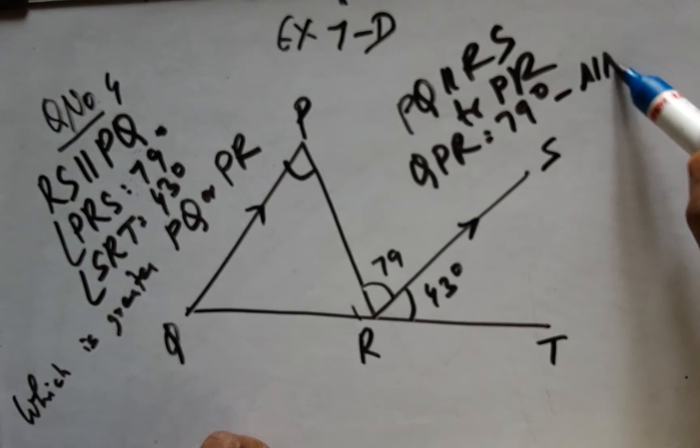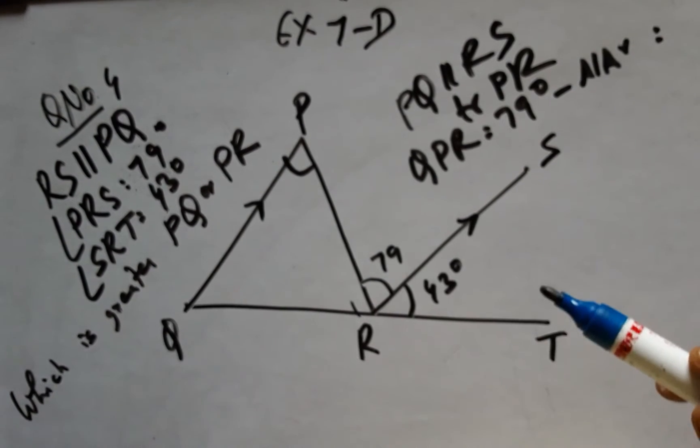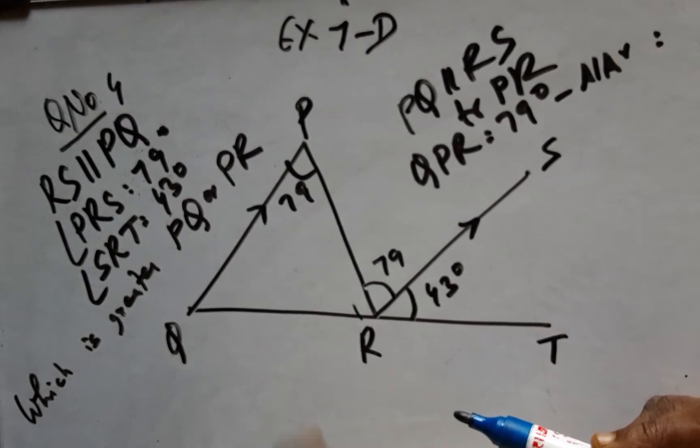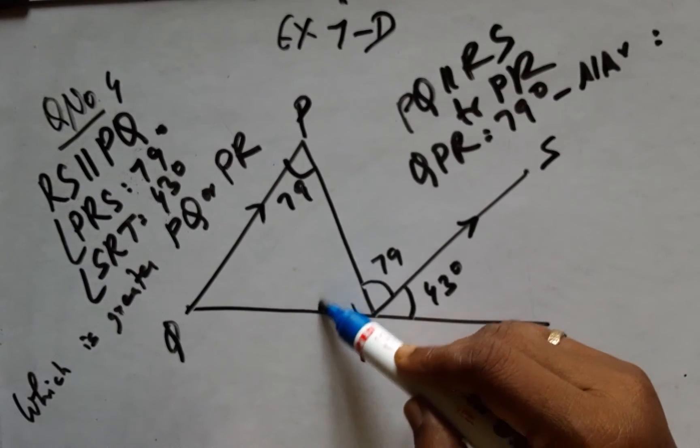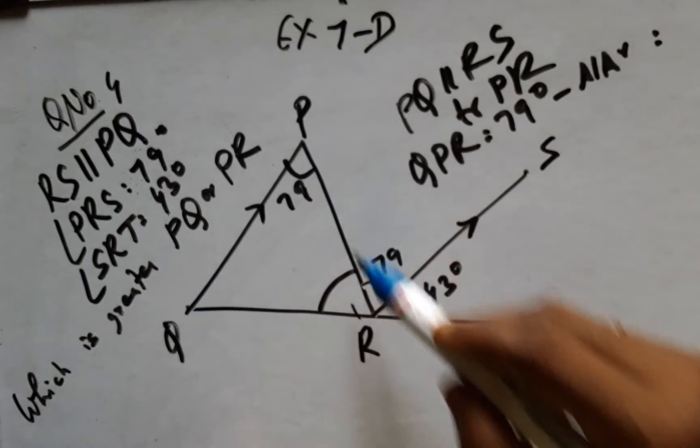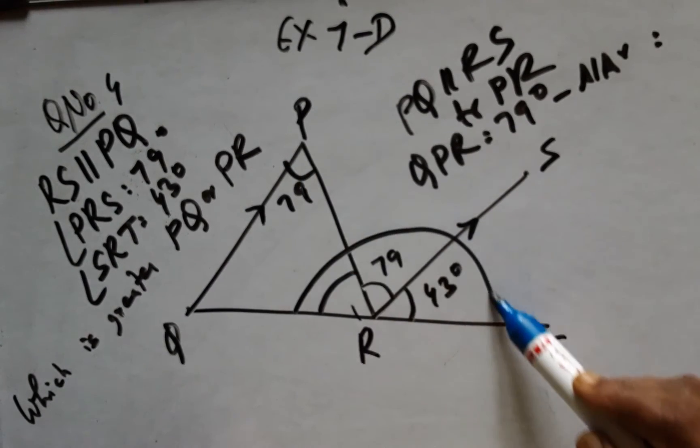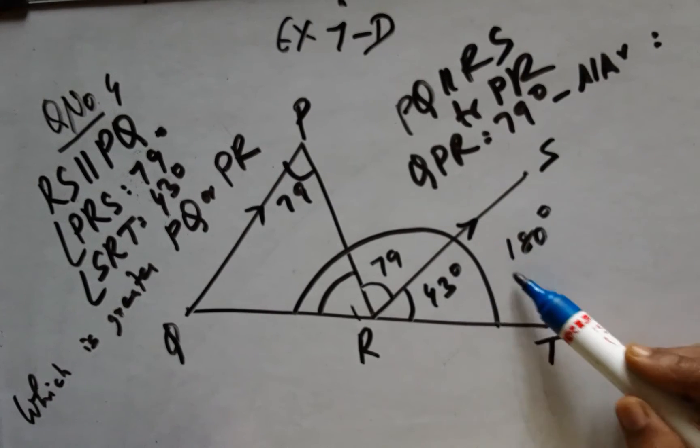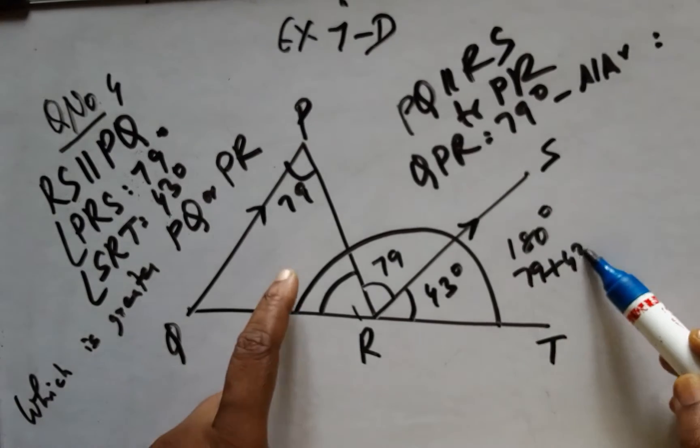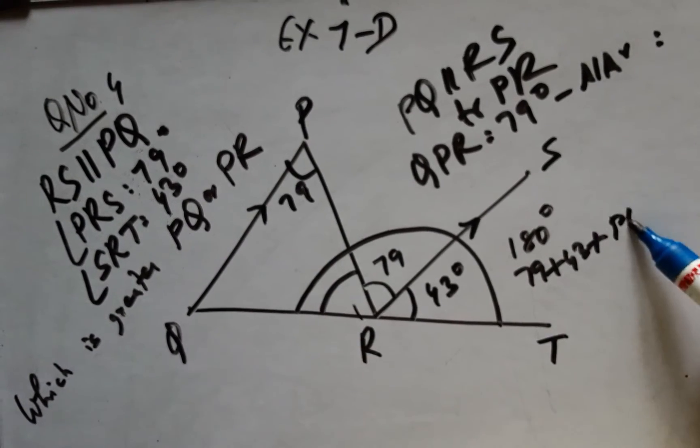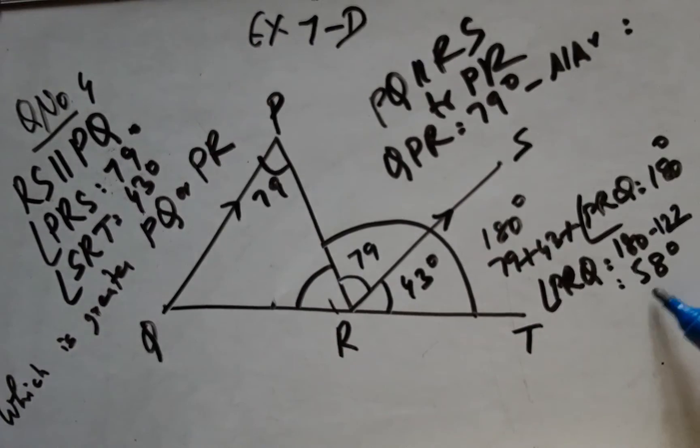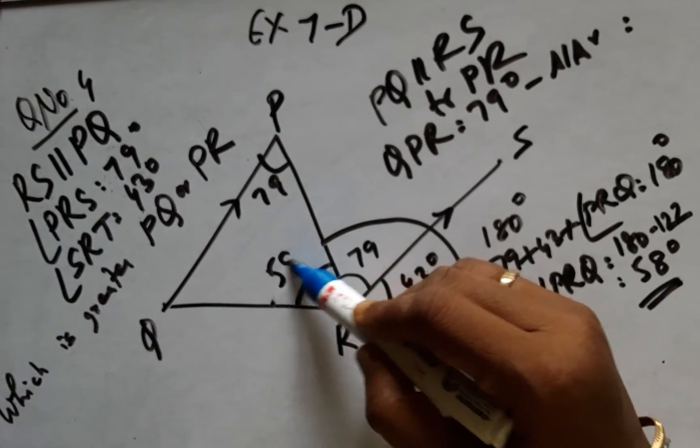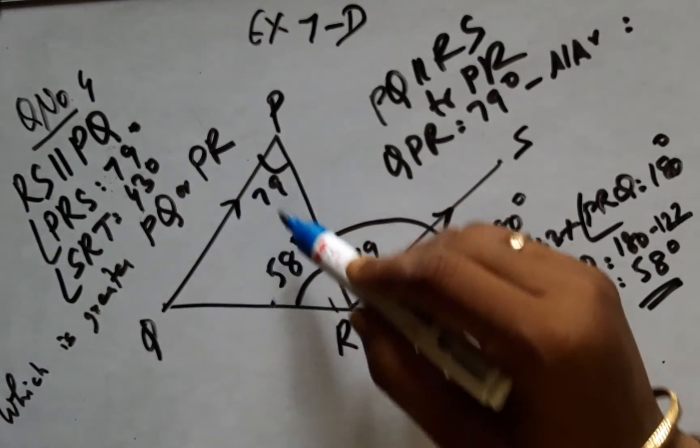The next step is to arrive at this angle. The entire line holds 180 degrees. Therefore, 79 plus 43 plus angle PRQ equals 180, so angle PRQ is 58 degrees. Now applying angle sum property.